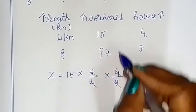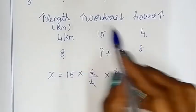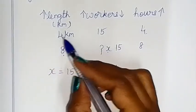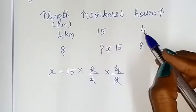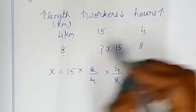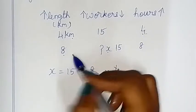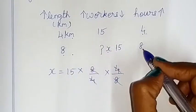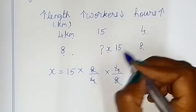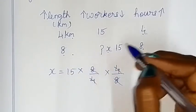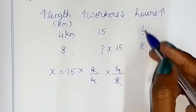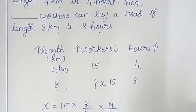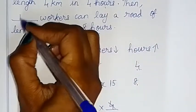15 workers. So this is the path: 4 km length, 4 hours; 8 km length, 1 road, 8 hours — 15 workers. So this is correct: 15 workers.